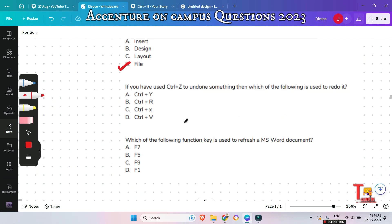Okay, the next question is, okay, this is a quiz question for you. This is very easy question, but this is often asked. Easy questions are often asked to check if you know or don't. So, if you have used Ctrl-Z to undone something, then which of the following is used to redo it? So, please give me the answer in the comment section.